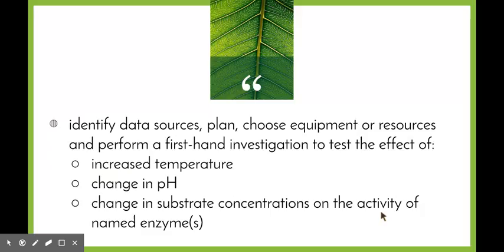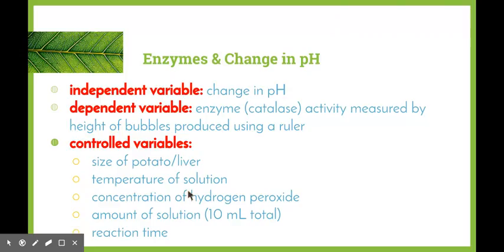Following up with this dot point is this one from the syllabus: identify data sources, plan, choose equipment or resources, and perform a first-hand investigation to test the effect of increased temperature, change in pH, or change in substrate concentrations on the activity of named enzymes. This is three different experiments, or first-hand investigations, that are all looking at the different ranges that enzymes need to function in.